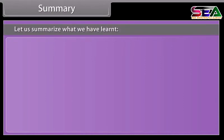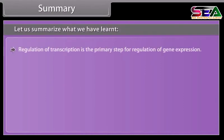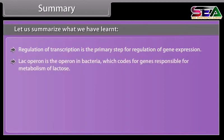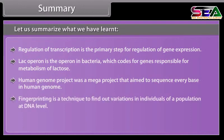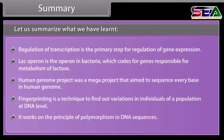Let us summarize what we have learned. Regulation of transcription is the primary step for regulation of gene expression. LAC operon is the operon in bacteria which codes for genes responsible for metabolism of lactose. The Human Genome Project was a mega project that aimed to sequence every base in the human genome. DNA fingerprinting is a technique to find variations in individuals of a population at the DNA level, and it works on the principle of polymorphism in DNA sequences.